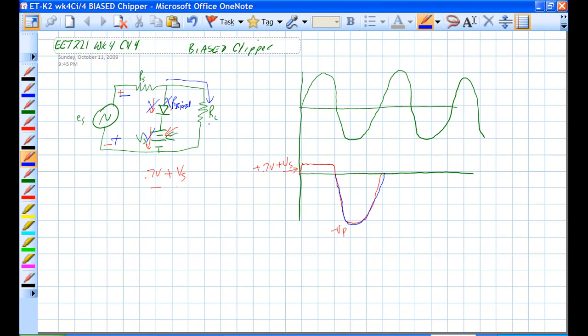We have current flow. Oh sorry, current flow this way, not that way. That was dumb. So anyhow, current flow that way. When it gets back up to here, it goes up to .7 volts plus VS, and then down to minus V peak.